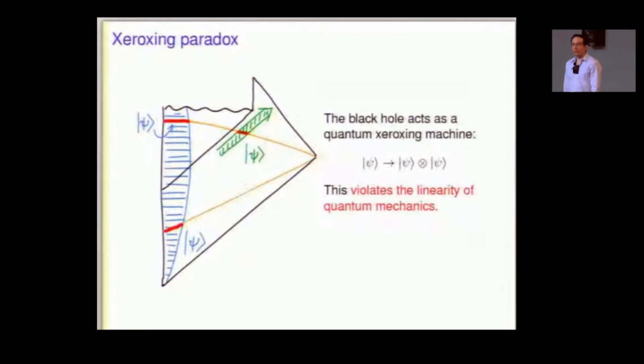So, the black hole, it didn't matter what psi was, of course, so the black hole acts as a quantum Xeroxing machine. It takes psi into psi cross psi, which violates the linearity of quantum mechanics, as you can check in one line. So, by trying to save unitarity, we screwed up some other principle of quantum mechanics.